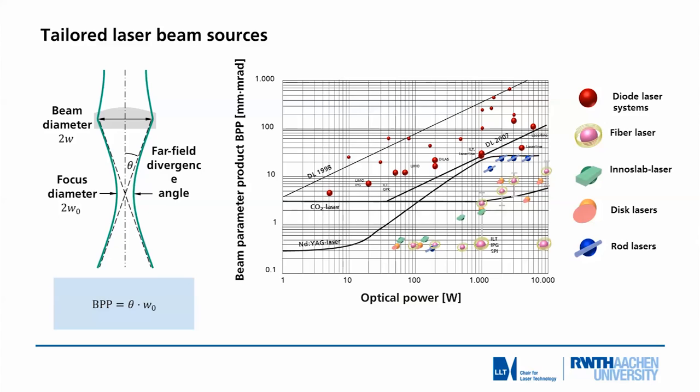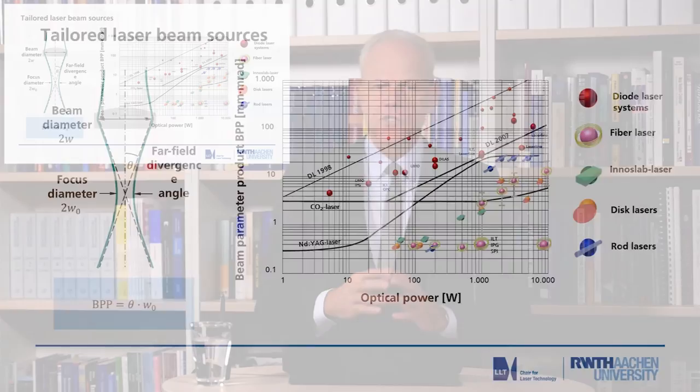What you see is a number of lasers: diode lasers, fiber lasers, InnoSlab lasers, disc lasers, rod lasers, different wavelengths, different building styles of lasers, which result in different beam qualities and different average powers. In this map, we can now draw the quality of the corresponding laser and show the areas and directions of development for the future.